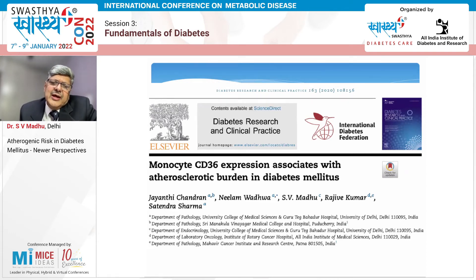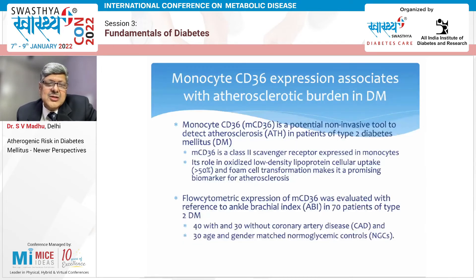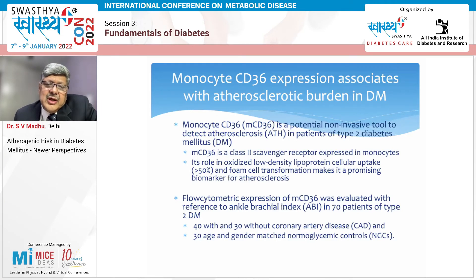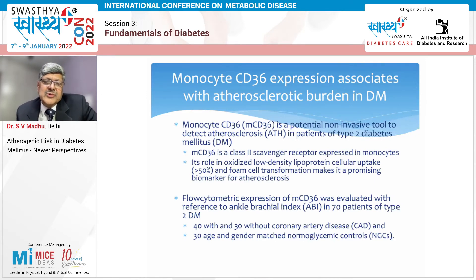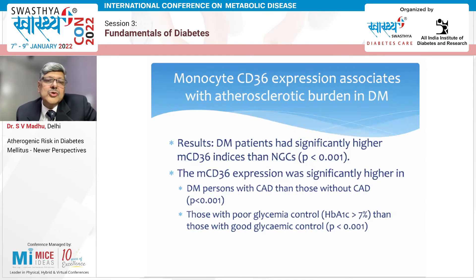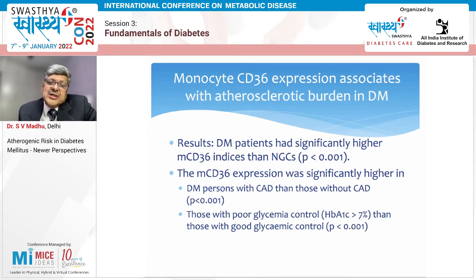We looked at CD36 expression by flow cytometry in monocytes and its association with atherosclerotic burden in diabetes mellitus — a potential non-invasive tool to detect atherosclerosis. CD36 is a class B scavenger receptor expressed in monocytes with a role in cellular uptake of oxidized LDL and foam cell transformation, making it an important biomarker for atherosclerosis. Flow cytometric expression of monocyte CD36 was evaluated and compared to ankle-brachial index in 70 patients of type 2 diabetes mellitus — 40 with and 30 without coronary artery disease — plus 30 controls with normal glucose tolerance.